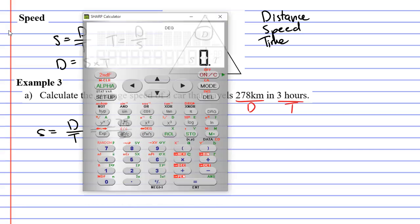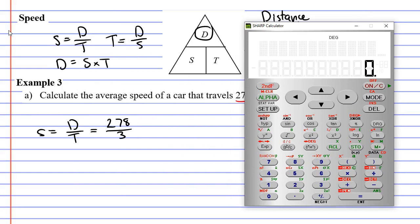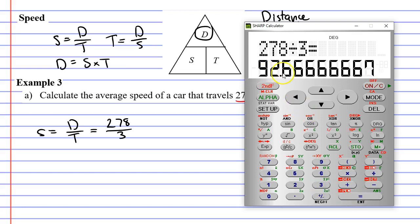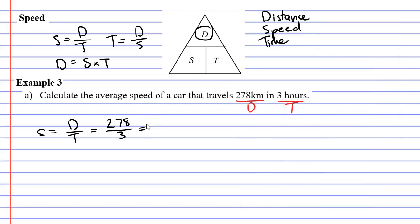Let's bring up our calculator here, and when it looks like a fraction, you can actually just use the divide button. So 278 divided by 3 gives us 92.6666, so we'll round this to 92.7. And because we're using kilometers and hours, our speed must be kilometers per hour.